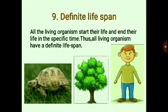Our last characteristic is the definite lifespan. All living organisms start their life and end their life in a specific time — they have a definite lifespan. For example, a tortoise has a lifespan of more than 100 years, a tree has an average lifespan of about 40 to 50 years, while the average lifespan of humans is about 60 to 70 years.